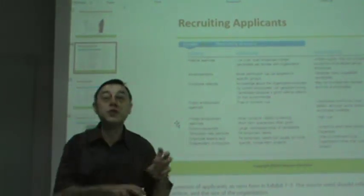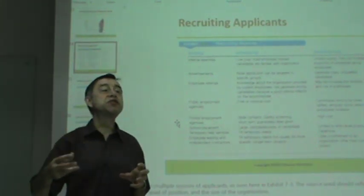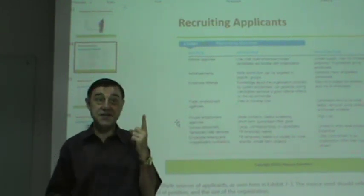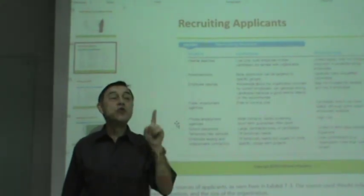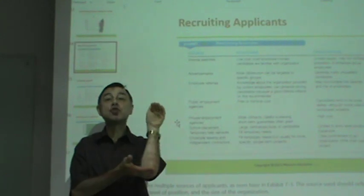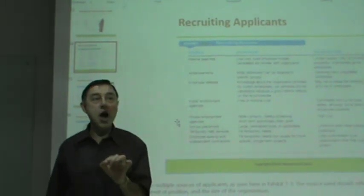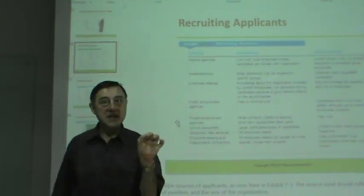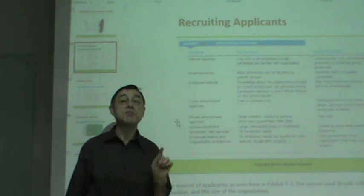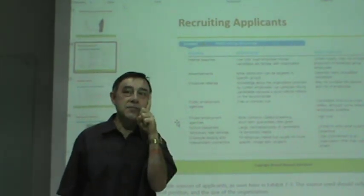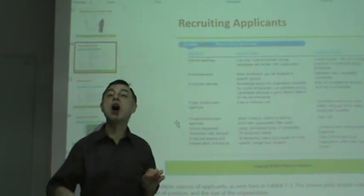Job description is a written statement — you actually write a description of the job. Job specification means the minimum requirements which you want for the job holder or applicant. So if someone is going to be teaching at a university, the minimum requirement is usually a master's degree, and the desired qualification is a doctorate degree.